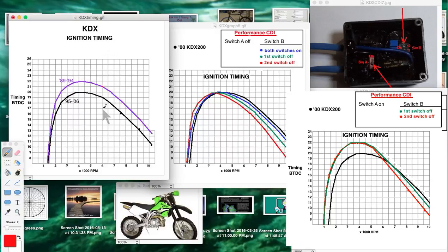At 6k RPM, the later version is at 19 and the older version is at 21.